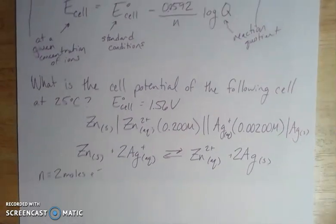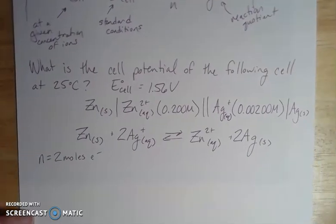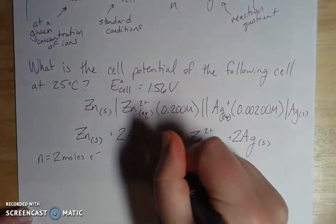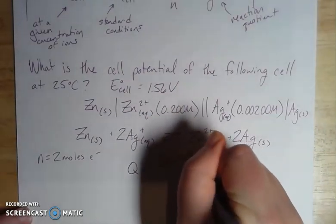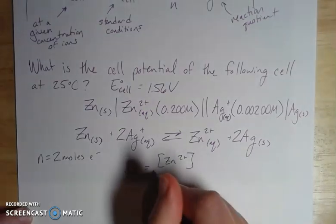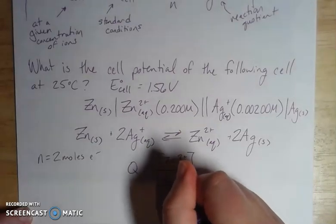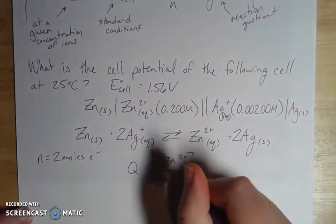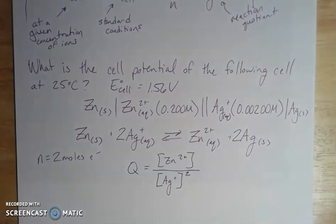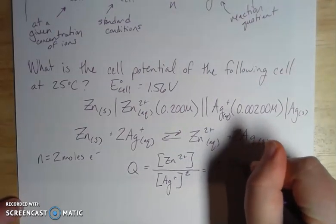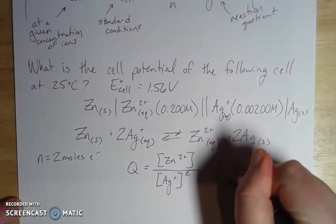Now for the Q value, that's the other part of my Nernst equation. It's going to have the same expression as my K. My Q is going to be equal to the concentration of my products, which is the zinc ions because silver is a pure solid, over the concentration of my reactants, which is my silver ions. I do have a coefficient of 2 once I balance this out, so this concentration is squared.